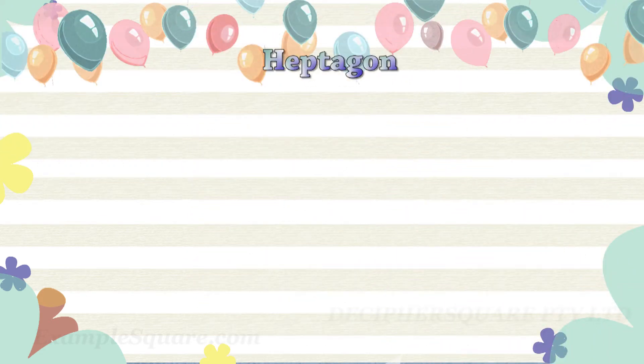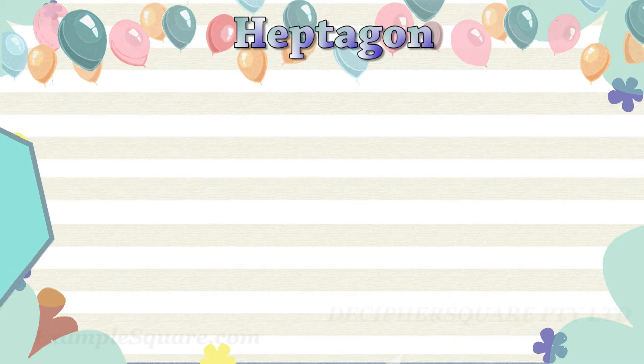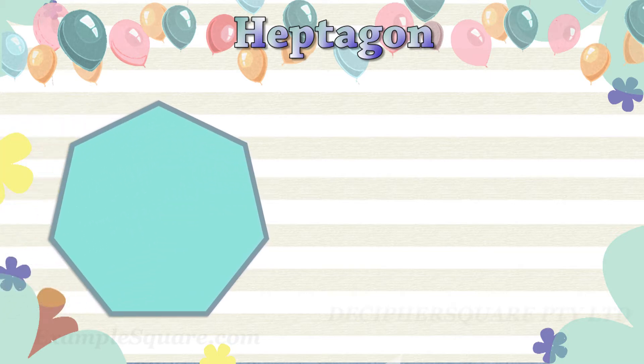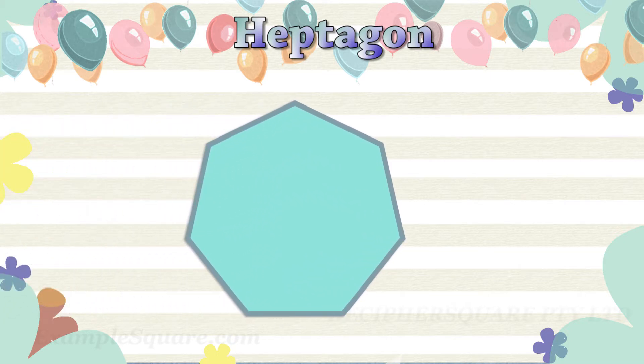A heptagon is a shape with seven sides and seven corners. This is a heptagon. It has seven sides.